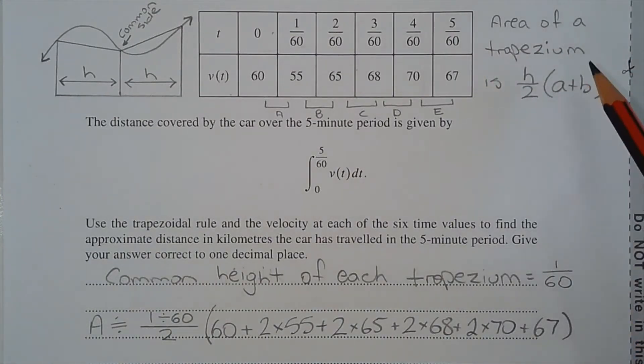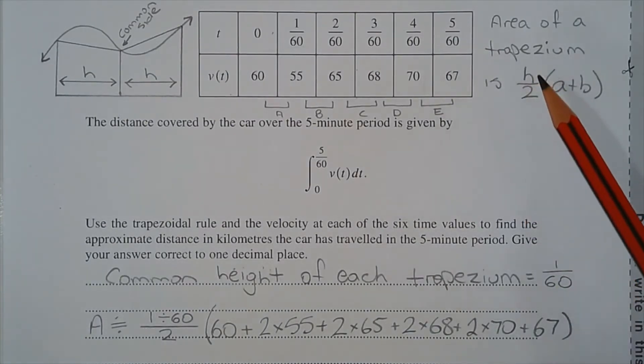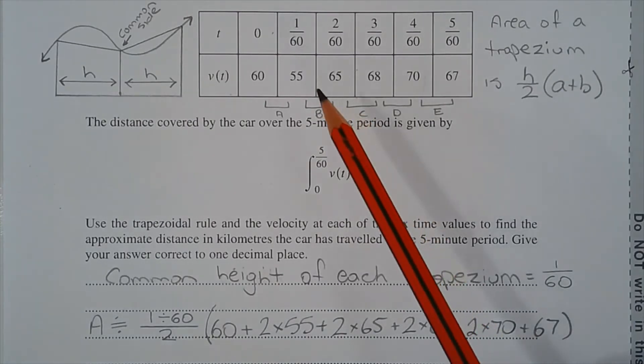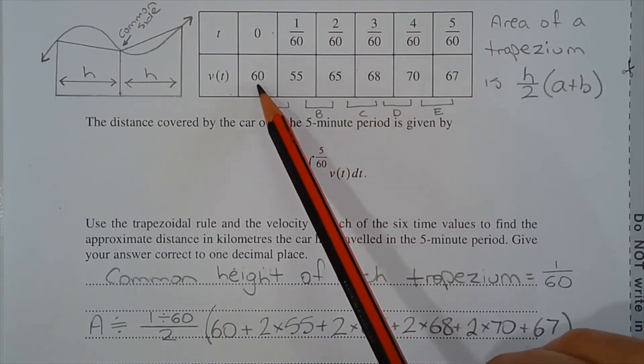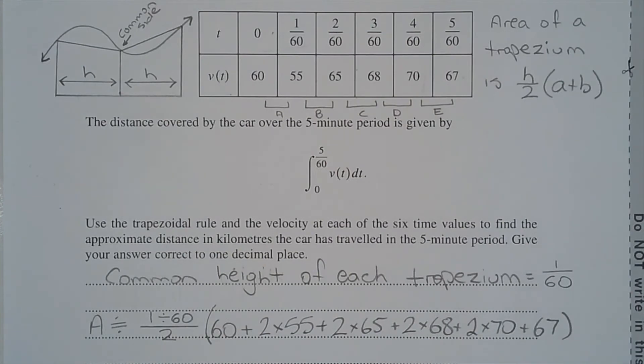Recall that the area of a trapezium is given by the formula h over 2 multiplied by a plus b, where h represents the distance between the parallel sides of the trapezium. Now there are 5 trapeziums drawn adjacent to each other, so there will be 4 common sides: 1, 2, 3, and 4. These sides here and here are not common and will only be used once.